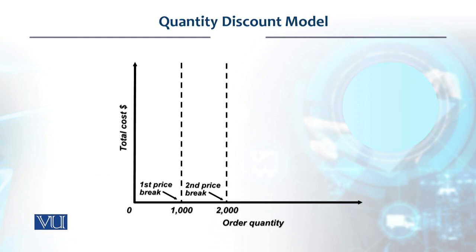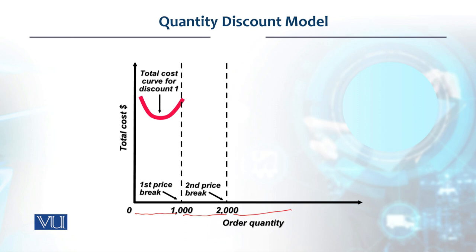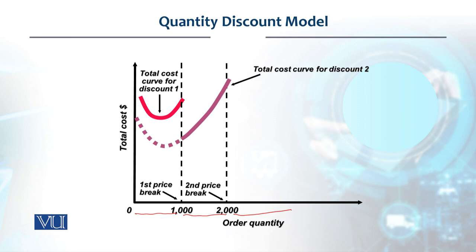Graphically, let's say we have a range between 0 and 1,000 units, then a 1,000 to 2,000 unit range at another price, and a range of more than 2,000 units at another discount price. We find the total cost curve for the first normal price, then the second discount price curve, and the third discount price curve.